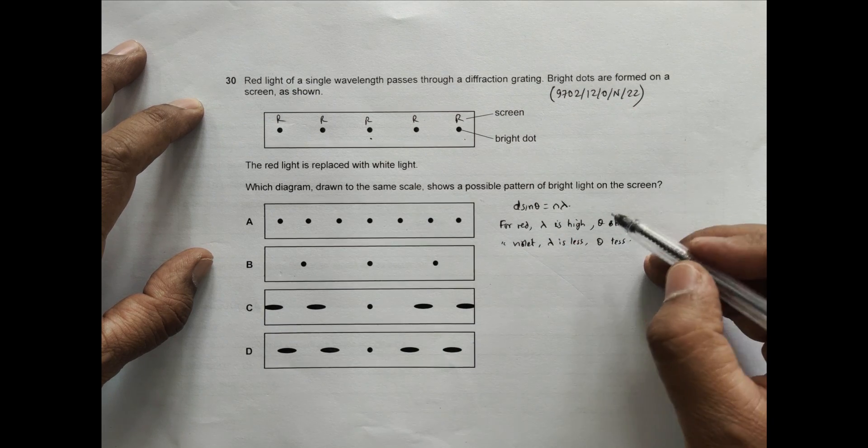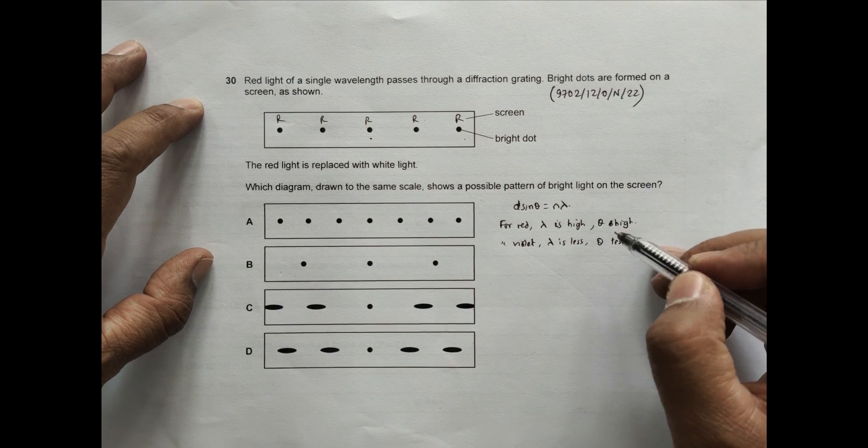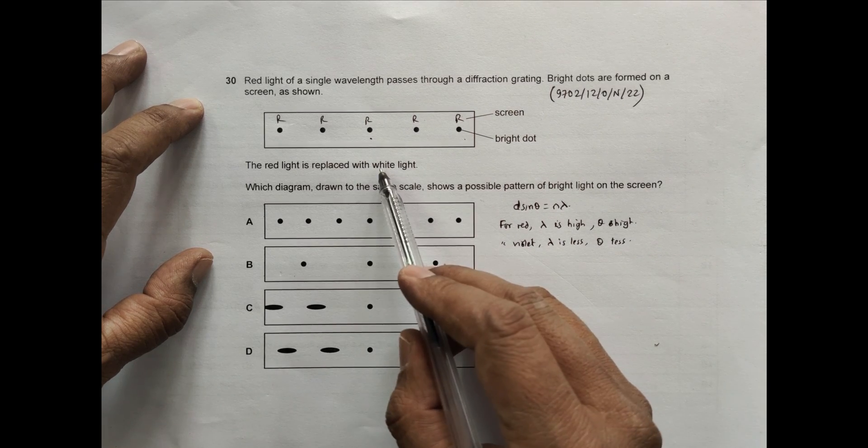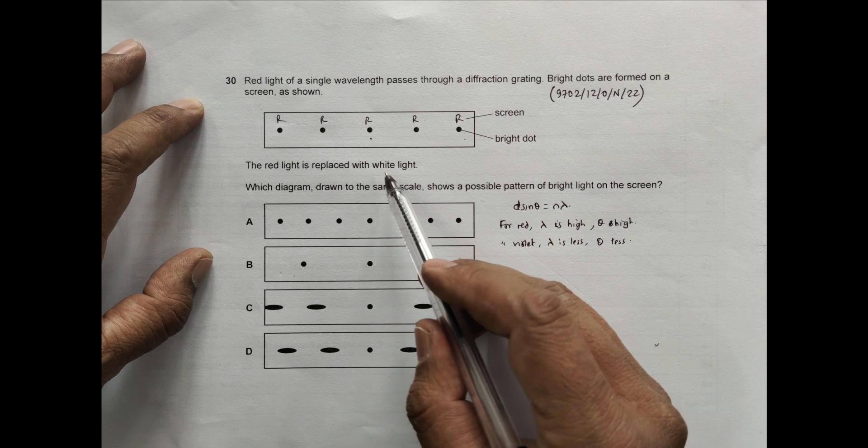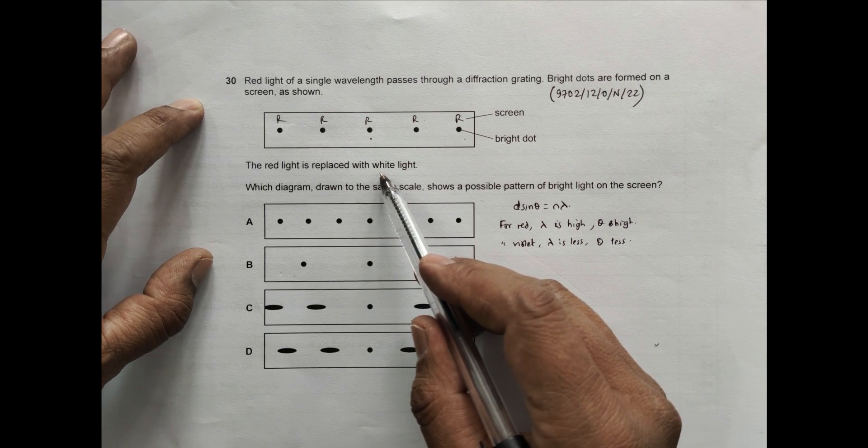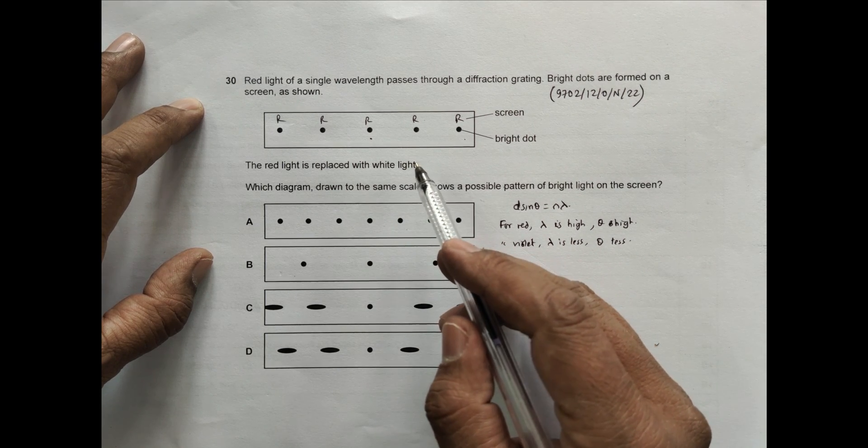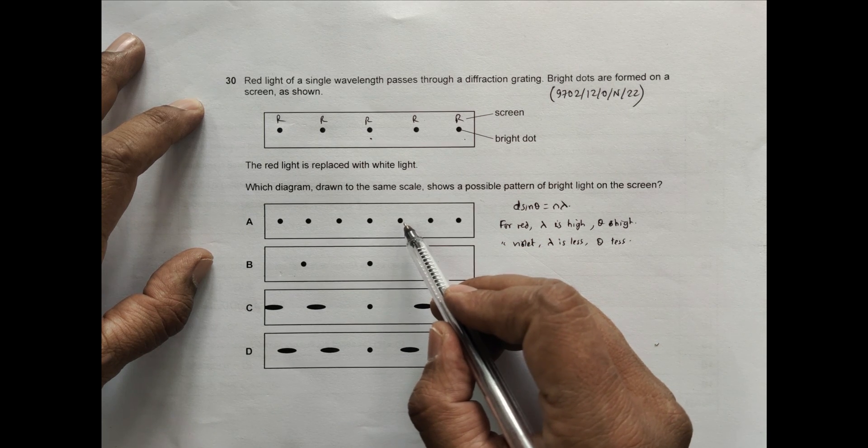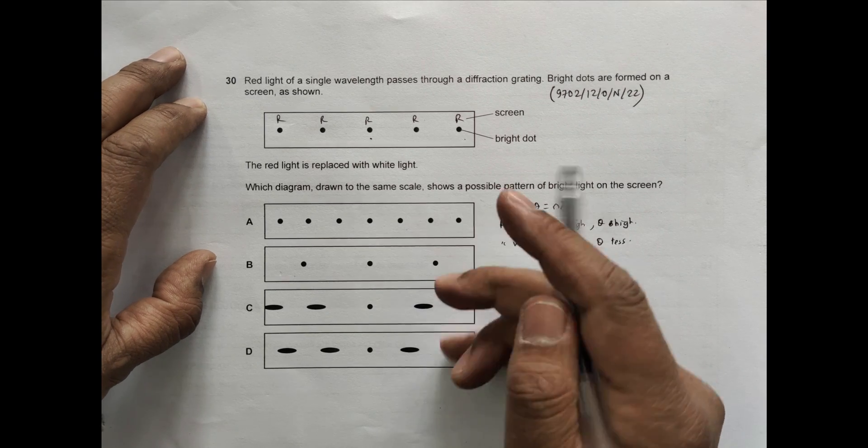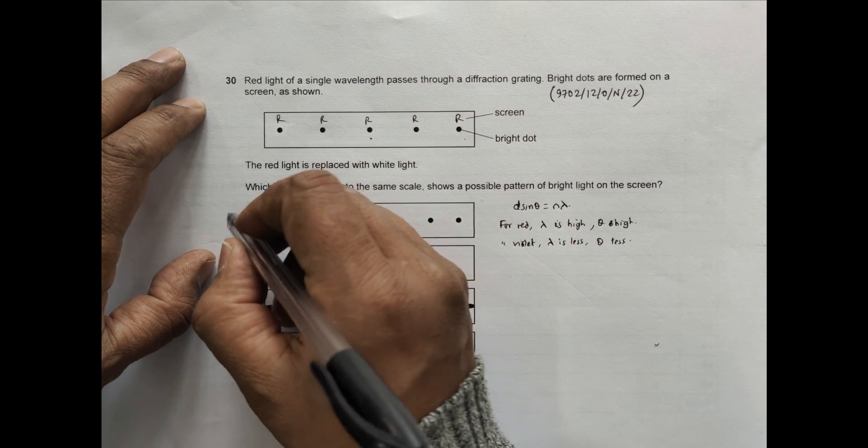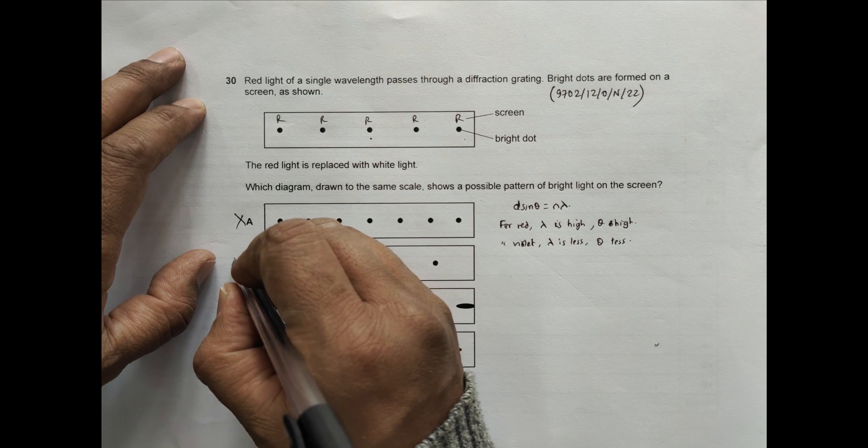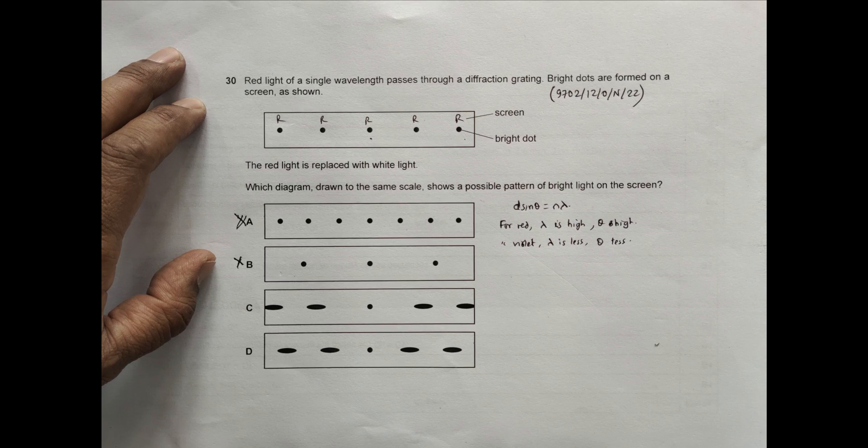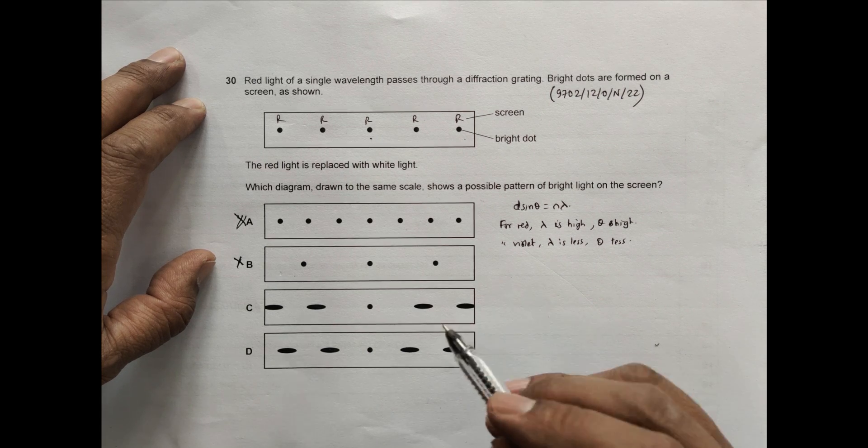Different angles are shown somewhat like this. White light will split into violet, indigo, blue, green, yellow, orange, and red. So the pattern will not be a dot, it should be somewhat longer. Those choices which give us dots disqualify. Only these two can qualify.